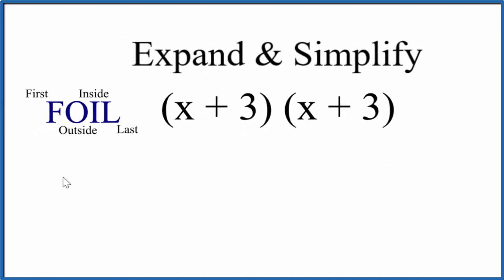of the FOIL method. This is a way to remember how you do this distributive property. You take the first term - that's x times x - that'll give us x squared. Then we take the outside - x times the 3